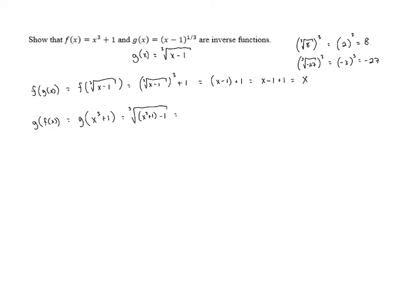Now, x³ + 1 - 1, the ones are going to cancel, and we're just going to be left with x³. And the cube root of x³ is just x due to similar reasons from what we saw before.